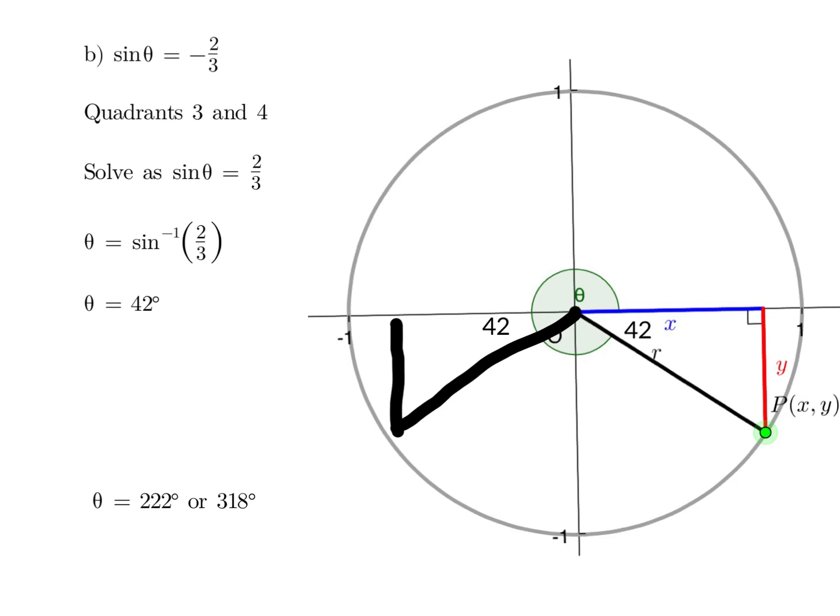Put that acute angle in the two triangles that you've drawn. Our first angle then becomes, from the positive x-axis using the angular measure around to the line, 180 plus 42, which is 222, and 360 minus 42, which is 318 degrees. Thank you.